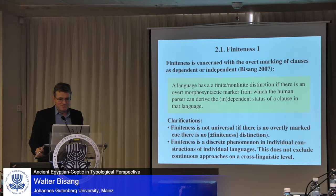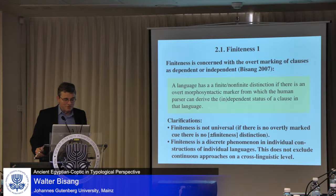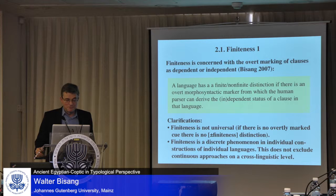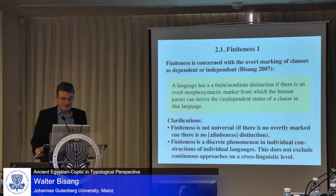Let's start with the three basic domains. First, very briefly: what is finiteness? I have a somewhat particular definition of what finiteness is, namely, it is about the presence of the overt marking of clauses as dependent or independent. So a language has a finite/non-finite distinction if there is an overt morphosyntactic marker from which the human parser can derive the status of that clause — whether that clause is dependent or independent.